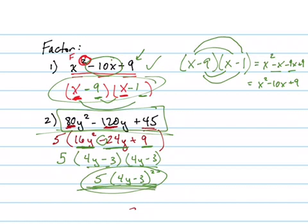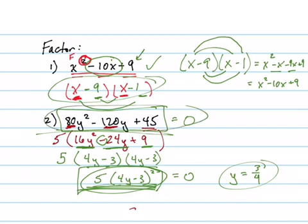Now why might you want to do that? Well, writing something in this manner makes it a lot easier to solve if you're trying to solve this equation. If this was equal to 0, for instance, now I could solve that very easily, by just saying, oh, then y has to equal 3 fourths. I'm done. Whereas if I look at this equation up here, the top one, I can't tell very easily that y equals 3 fourths. I can't solve it very quickly without factoring it first.